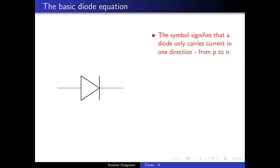The symbol of a diode is an arrow — it says that the current only flows in one direction. The p side of the diode and the bar signifies the n side, and current only flows from p to n and not from n to p. At least as you have already seen, there is a current which flows from n to p, but that's very very tiny.